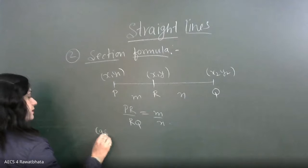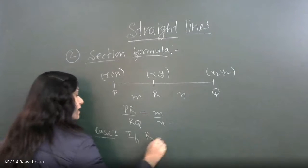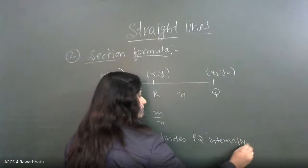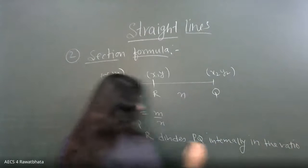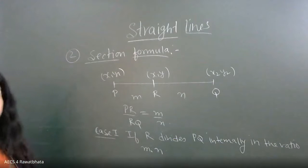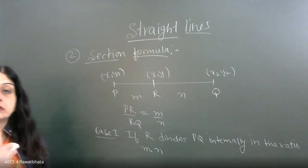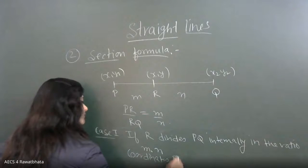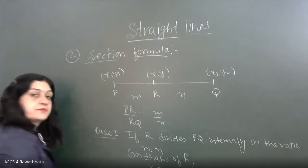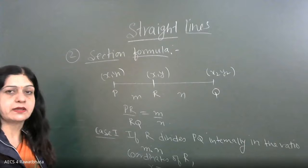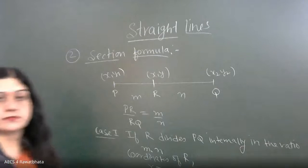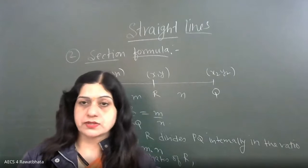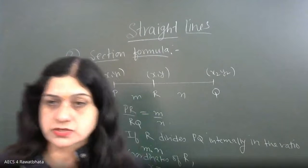Case one is if R divides PQ internally in the ratio of M is to N. Then the coordinates of R, can anybody tell me? Adhyansh is saying MX2 plus NX1 upon M plus N, very good.